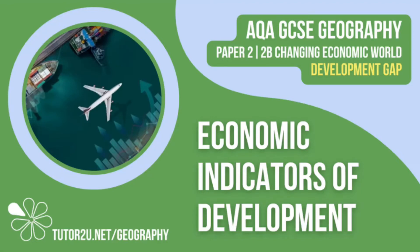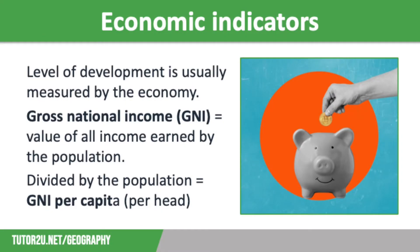Welcome to this Tutor2U topic video that looks at Economic Indicators of Development. This is part of Paper 2, Unit B, Changing Economic World. In order to compare the levels of development between countries, we use development indicators. These are pieces of data that measure important aspects of a country. There are economic and social indicators that we can use, and this video focuses on economic measures of development.